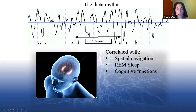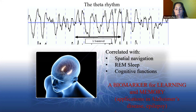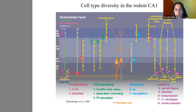Theta rhythms are very prominent oscillatory activities in many brain structures, but they are particularly strong in the hippocampus. This is an area that is associated with spatial navigation, rapid eye movement sleep, and many cognitive functions. As a result, theta rhythms have been considered to constitute a very promising biomarker for learning and memory, with applications in pathologies such as Alzheimer's and epilepsy.